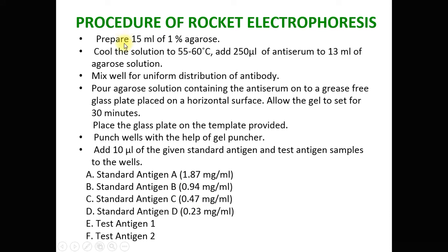For the procedure: first, 1% agarose gel is prepared — 15 ml is prepared. The solution is cooled to 55–60 degrees Celsius. Then 50 microliters of antiserum is added to 13 ml of the agarose solution and mixed well for uniform distribution of the antibody. This agarose solution is poured on a grease-free glass plate kept on a horizontal surface. The gel is allowed to set for 30 minutes, then the glass plate is kept on the template and wells are punched with the gel puncher. Ten microliters of the standard antigen and test antigen samples are added to the wells — the first four wells receive standard antigens and the last two wells receive test antigens.